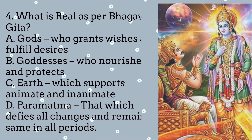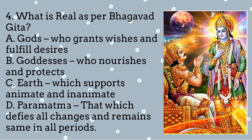What is real as per the Bhagavad Gita? A. Gods, who grant wishes and fulfill desires. B. Goddesses, who nourish and protect. C. Earth, which supports animate and inanimate. D. Paramatma — that which defies all changes and remains the same in all periods.